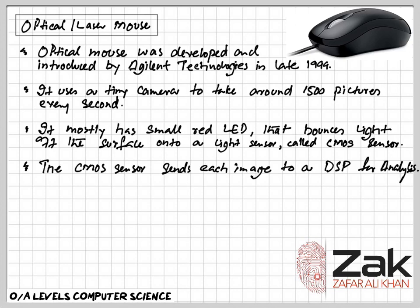The CMOS sensors send each image to a digital signal processor, or DSP, for analysis. The DSP is a specialized microprocessor chip with its architecture optimized for the operational needs of digital signal processing.